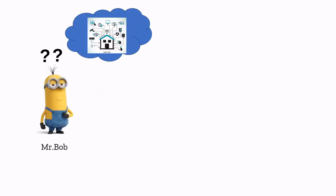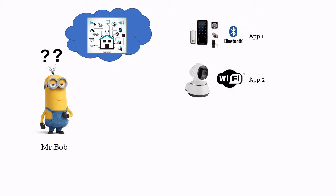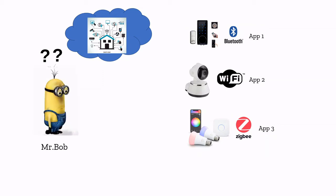To understand this scenario better, consider the story of Mr. Bob. Bob wants to build a smart home. He needs a smart lock, a smart lighting system, and a camera. His smart lock works on Bluetooth, so he needs a separate app. His Wi-Fi camera needs another app. His smart lighting system runs on Zigbee and needs yet another app. His phone ends up full of separate applications, and he must open a different one each time he wants to control something. This makes Bob very sad.